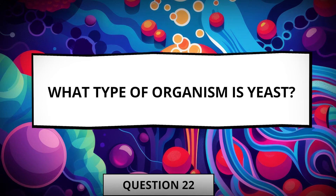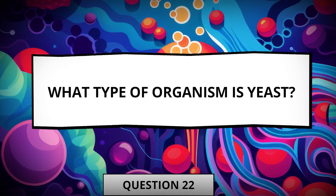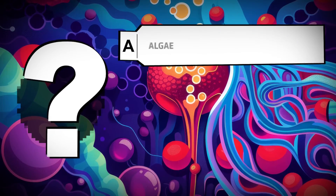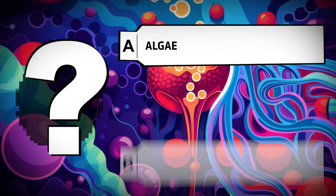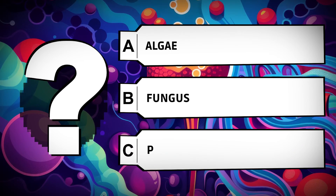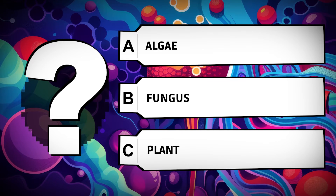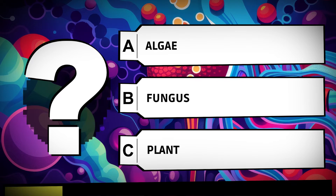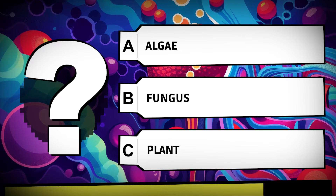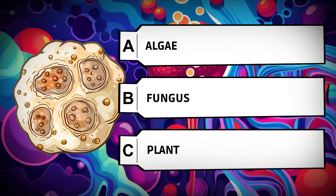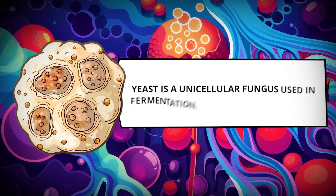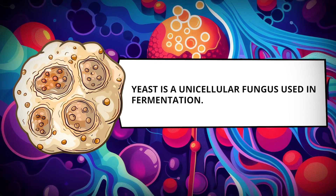What type of organism is yeast? Algae. Fungus. Plant. Yeast is a unicellular fungus used in fermentation.